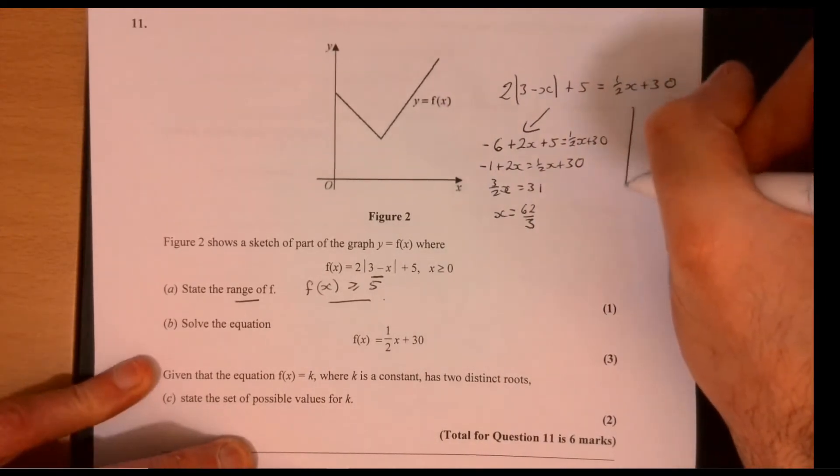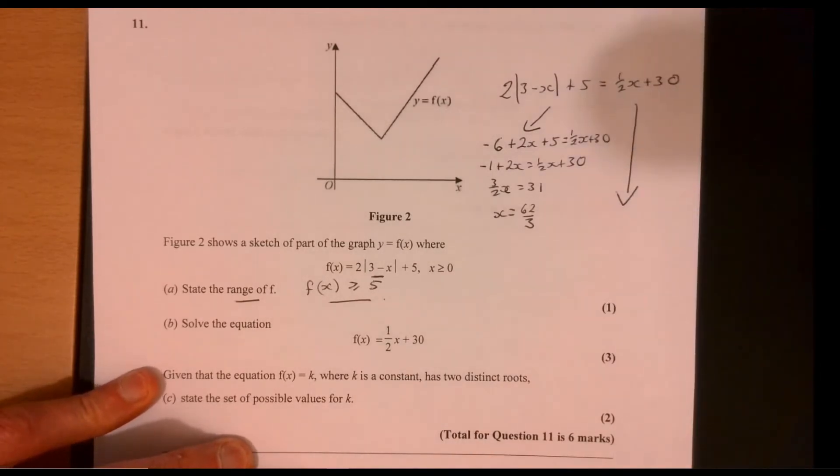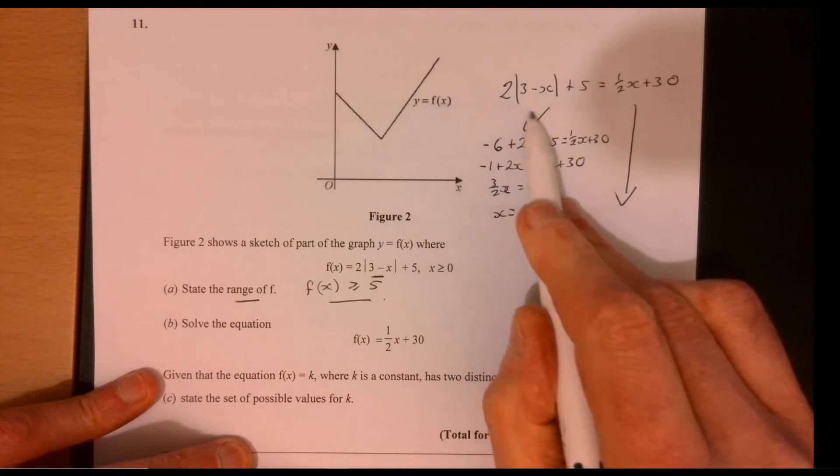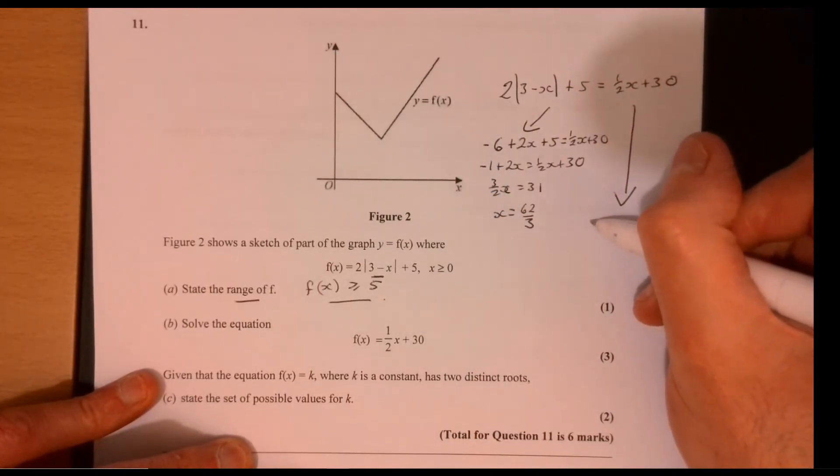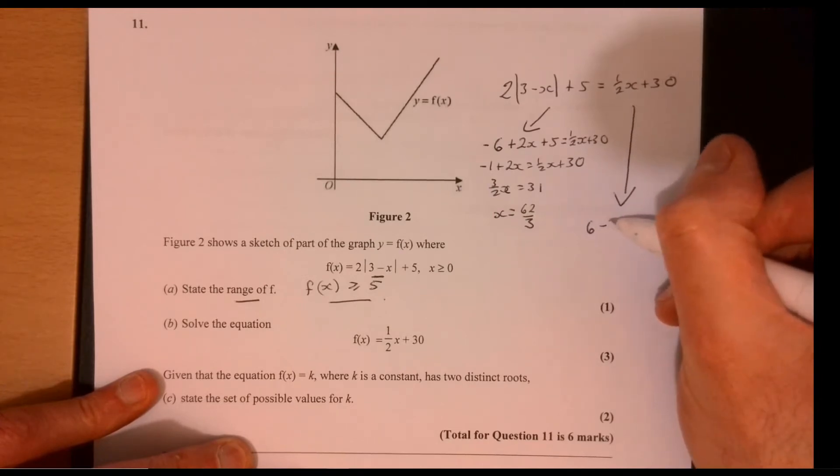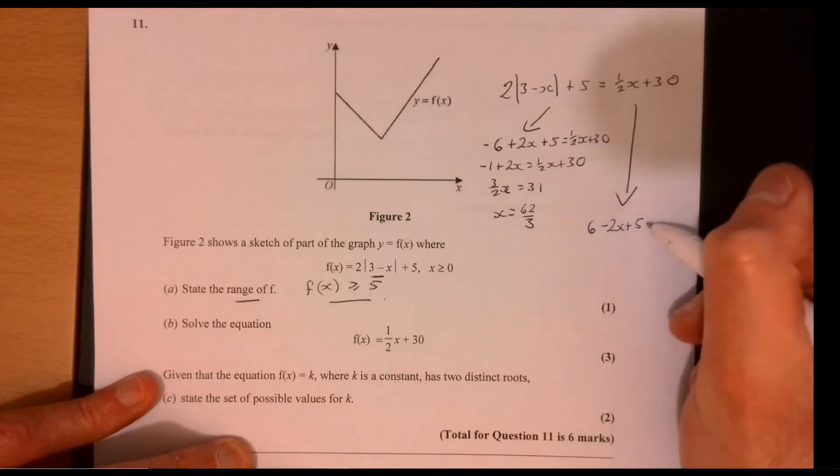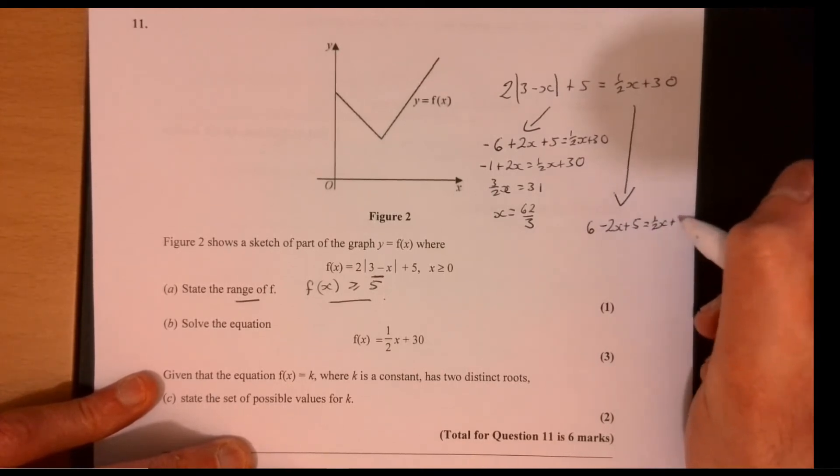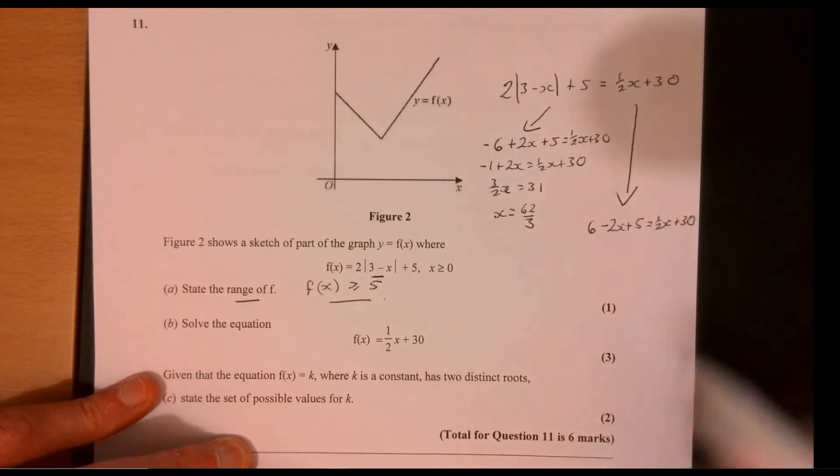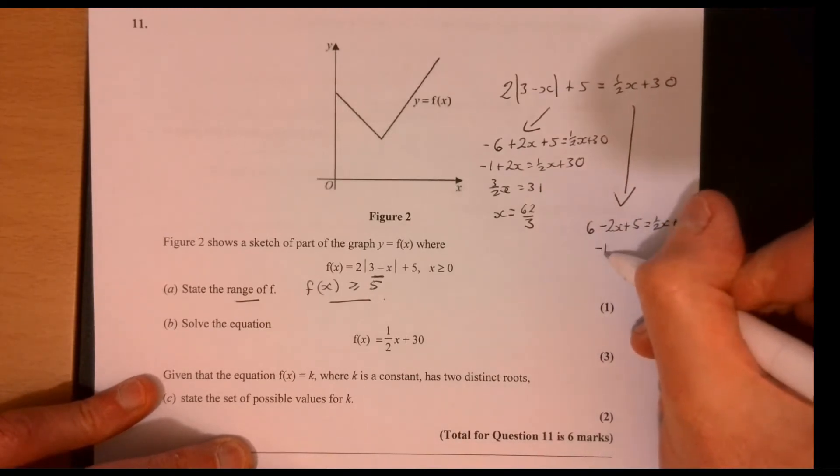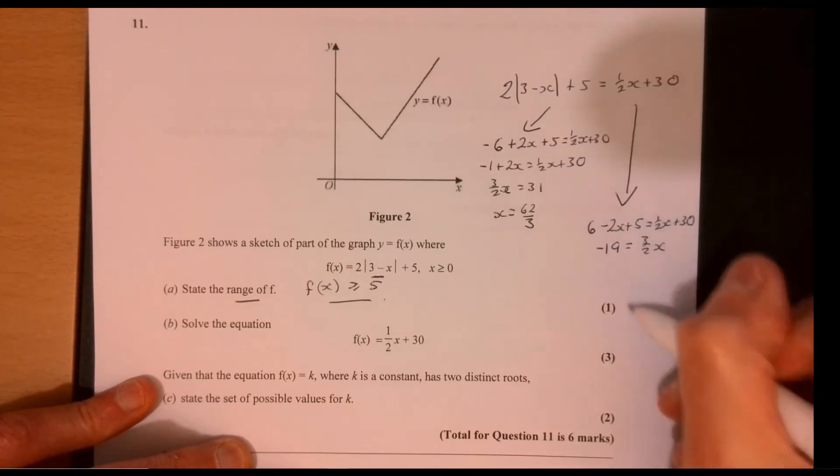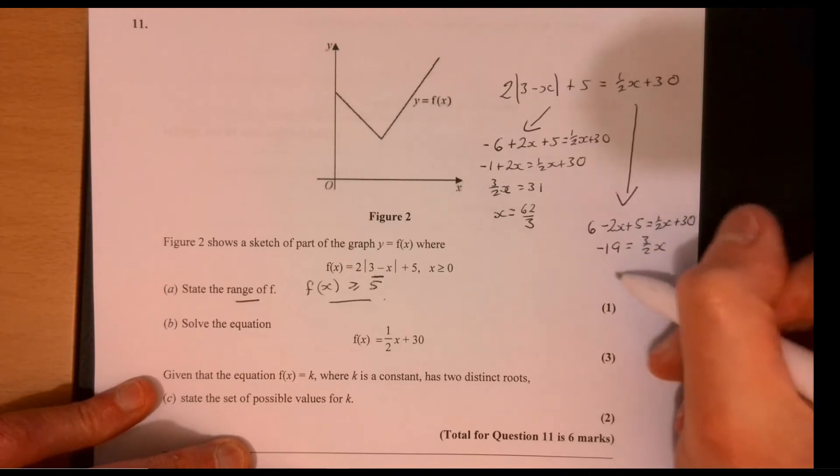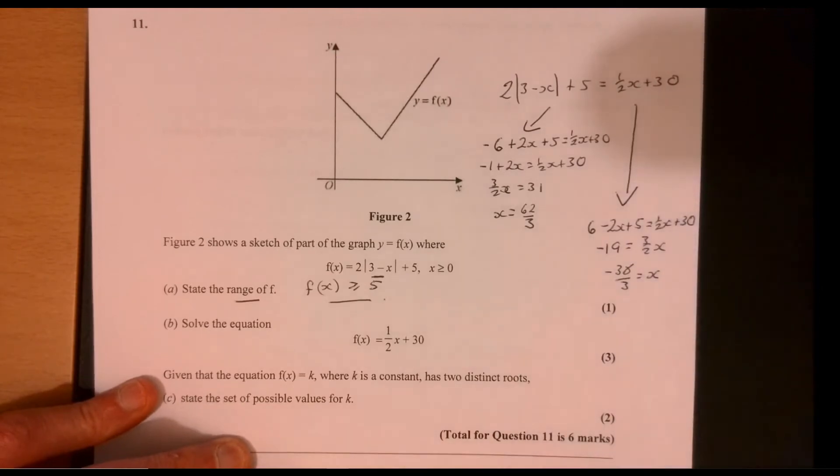Now let's consider the other possible option. What about if this ends up being a positive? So that would give us 6 take away 2x plus 5 equals half x plus 30. So the best way of doing these is just to consider both options. So if we go from there, that would give me minus 19 equals 3 over 2x multiplied by 2 divided by 3. So that's going to give me minus 38 over 3 equals x.